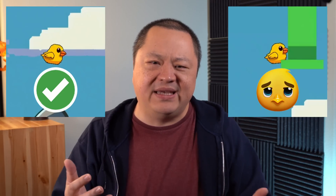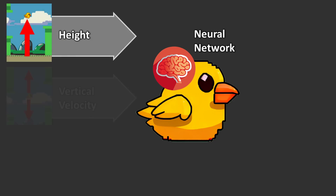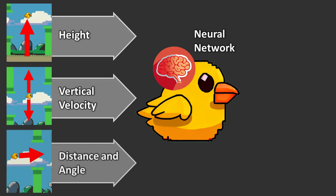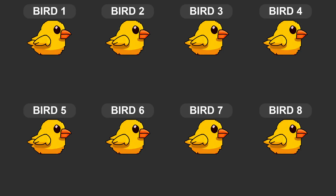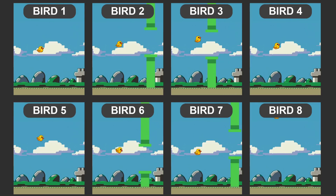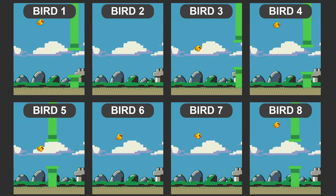But what does this reward even mean? The AI bot has a virtual brain called a neural network that receives the inputs: height, vertical velocity, distance, and angle to the next gap. Using this information, the neural network brain decides when to flap. We can wire the internals of different bird brains in different ways, so they each choose to flap at different times. In a sense, you can think of each virtual bird having its own personality.